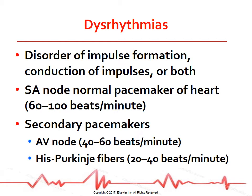Dysrhythmias result from disorders of impulse formation, conduction of impulses, or both. The heart has specialized cells in the SA node, atria, AV node, bundle of His, and the Purkinje fibers, which can fire or discharge spontaneously.